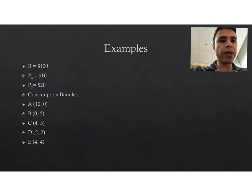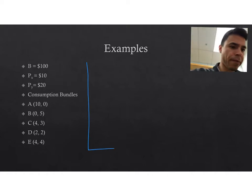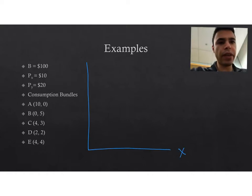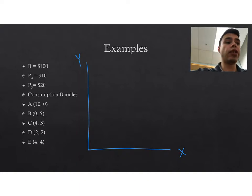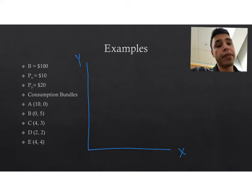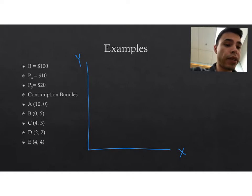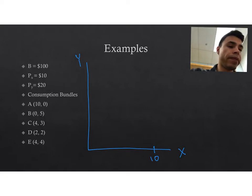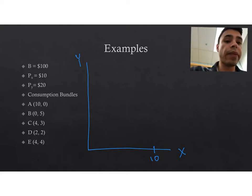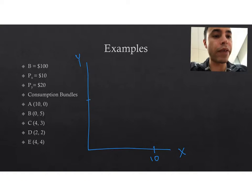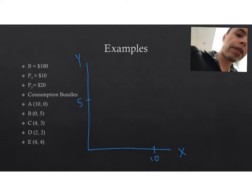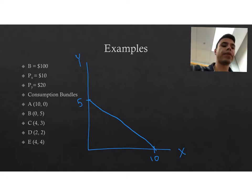Let's do a few examples. We'll start by drawing a Cartesian plane with X on the horizontal and units of good Y on the vertical. When you have a budget of $100 and the price of X is equal to $10, you could at most purchase 10 units of good X if you spend all your money on good X — that's the horizontal intercept. And if you buy zero units of good X and spend all your money on good Y, you could afford at most 5 units of good Y, giving us the basic triangle outline of the feasible set.